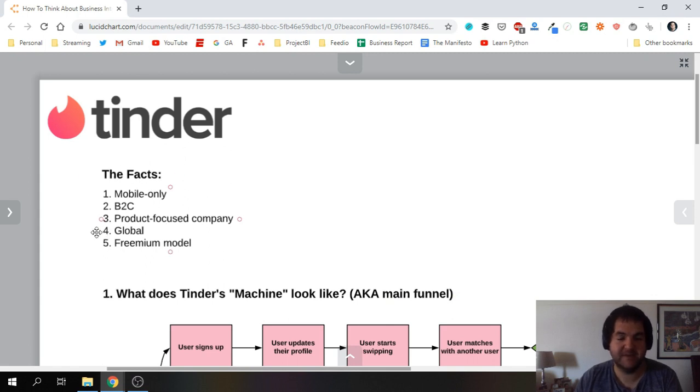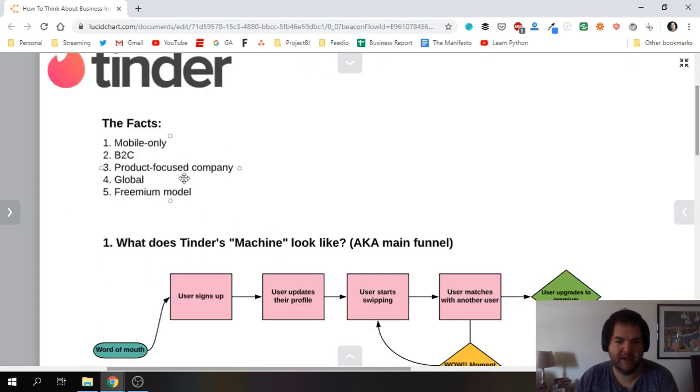So the first thing I like to look at is the high level information about the company. So with Tinder we all know it's a mobile-only company. Well actually I noticed they have a website now but for most of its history it's been mobile only. We know it's B2C and we also know it's a product-focused company. What I mean by that is it doesn't have a big sales team. Since it's B2C it's working directly with consumers. They don't do a huge amount of marketing. It's mainly around word of mouth and the product is very much what drives the business. We also know it's a global company and that they use a freemium model so anyone can sign up. It doesn't cost anything to use it and then the goal is that a percentage of those users ultimately upgrade to a premium plan.